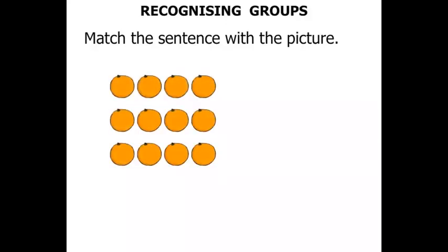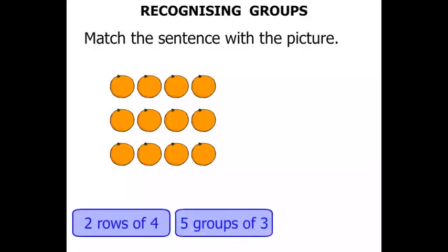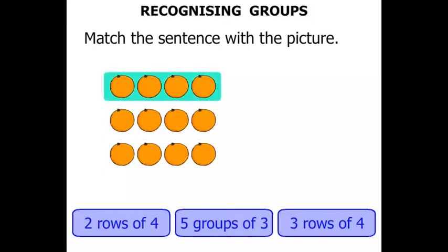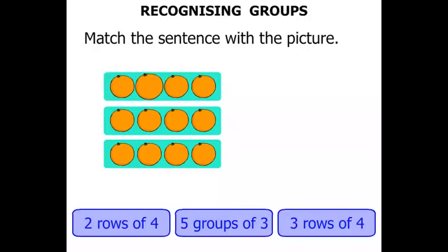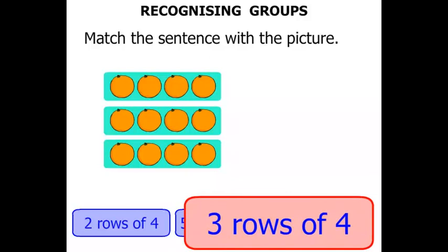Lots of oranges here. Do we have two rows of four, or five groups of three, or three rows of four? Let's see — that's one row, that's two rows, and that's three rows. How many in each row? One, two, three, four. Four in each row. So we've got three rows of four.